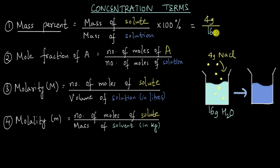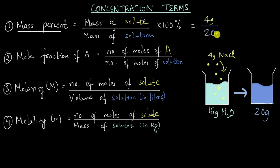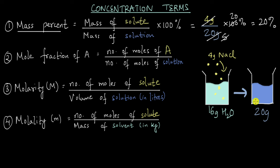Will it be 16 grams? No, it won't be 16 grams — 16 grams is the mass of the solvent water. We added 4 grams of NaCl to 16 grams of water, so the solution will be 20 grams. The mass of the solution is 20 grams, not 16 grams. Be careful with this calculation. We multiply by 100%, giving us 4/20 × 100% = 20%. So the mass percent of the solute in this solution is 20%.